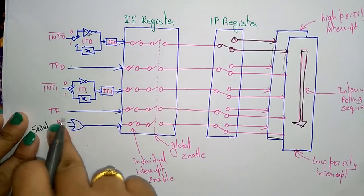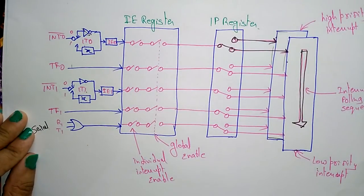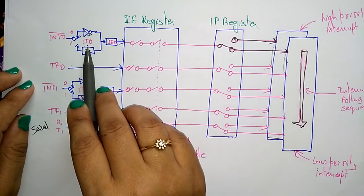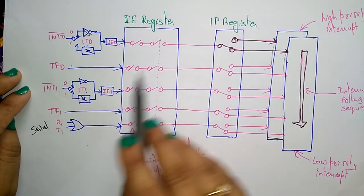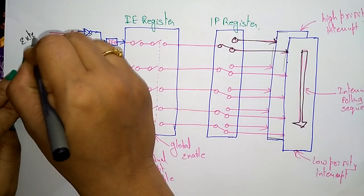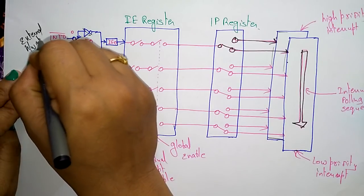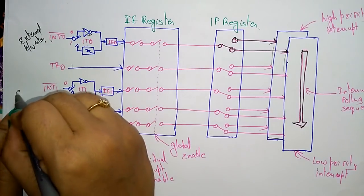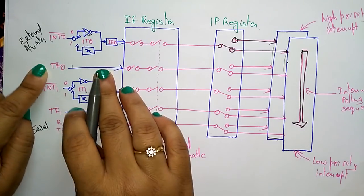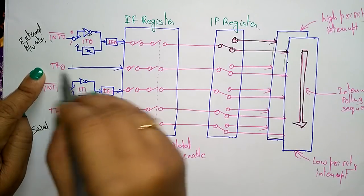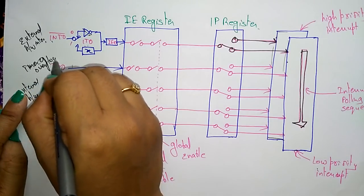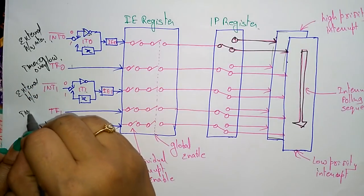The different types of interrupts are: the timer 0 overflow interrupt, the external hardware interrupt INT0, the external hardware interrupt INT1, and the timer 0 overflow interrupt and timer 1 overflow interrupt.